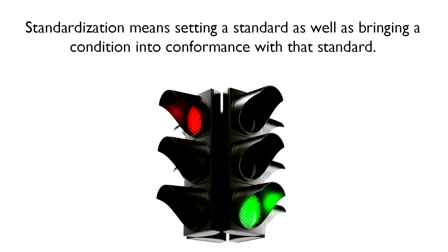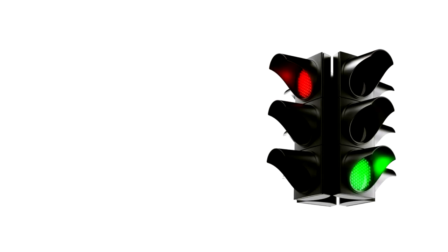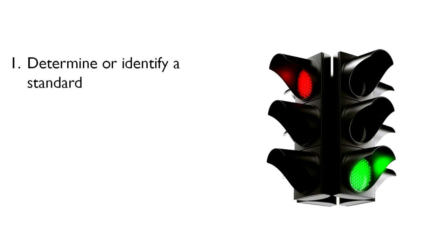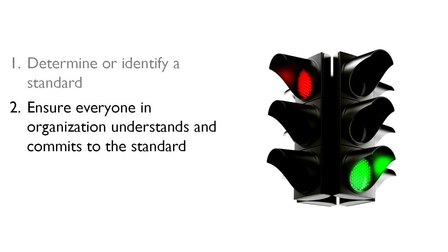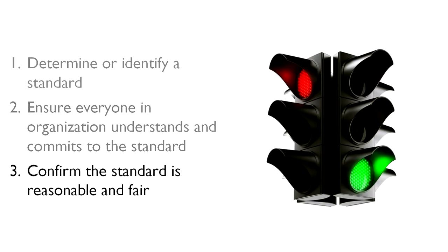Standardization means setting a standard as well as bringing a condition into conformance with that standard. There are three steps to the standardization cycle. First, we must determine or identify a standard. Next, once we know what the standard is, we must ensure everyone in the organization understands and commits to following it. Third, we must check to see that the standard is reasonable, fair, and can be followed, while also finding ways to improve it.